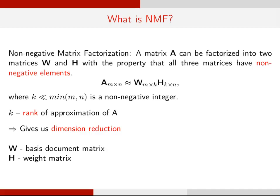NMF states that a non-negative matrix can be factorized into two non-negative matrices, W and H. A is of size m cross n, W of size m cross k, and H of size k cross n. K is a non-negative integer much less than the minimum of m and n.